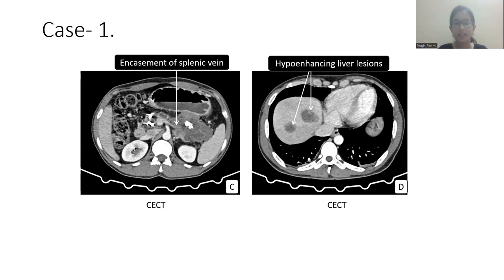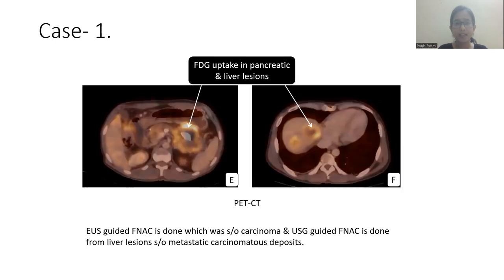In the liver, there are hypoenhancing focal lesions. On PET-CT scan, we can see FDG uptake in the pancreatic and liver lesions. In our institute, endoscopic ultrasound-guided biopsy was done, which was consistent with carcinoma. Ultrasound-guided biopsy from liver lesions was consistent with metastatic carcinoma.